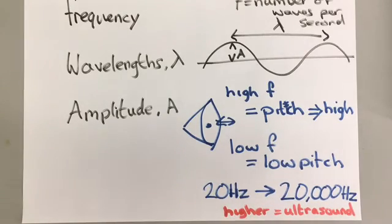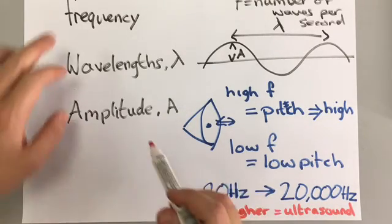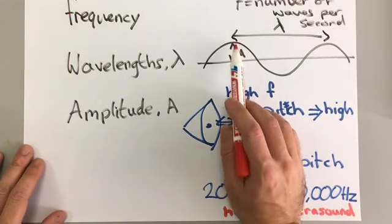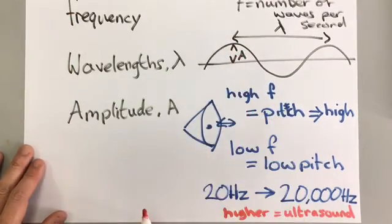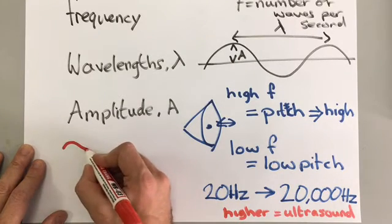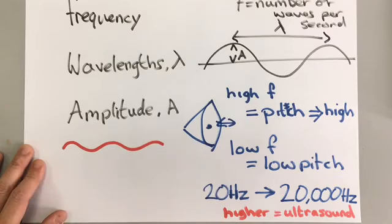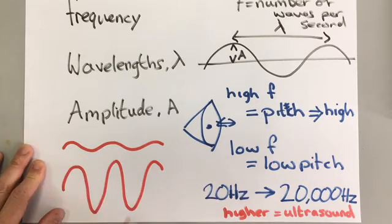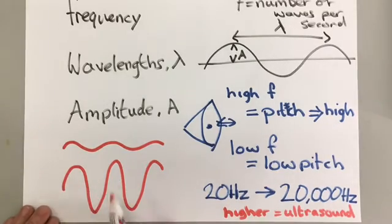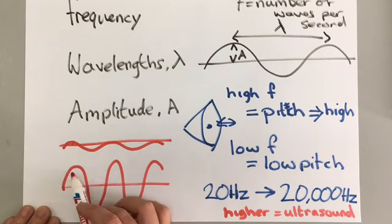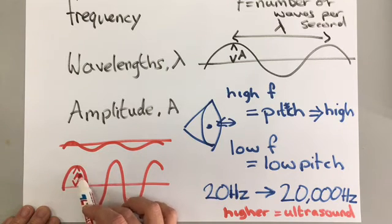Now if we look at amplitude, amplitude is slightly different. Amplitude is not directly related to the frequency and the wavelength. Amplitude is the height of the wave here. So if we have a wave like this, and then we have another wave like this, the difference between these two waves is the amplitude. The one at the top has a very low amplitude. The one at the bottom has a very high amplitude.